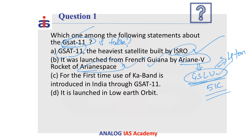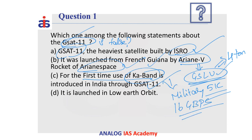Another important point about GSAT-11: for the first time, Ka-band was used in this satellite. It was meant for military communication as well as providing high-speed internet up to 16 Gbps for Digital India services. The false statement is that it was launched into low Earth orbit — no communication satellite with such high utility would be placed in LEO, as that would impede communication over a larger geographical area. GSAT-11 is correctly placed in geosynchronous or geostationary orbit.